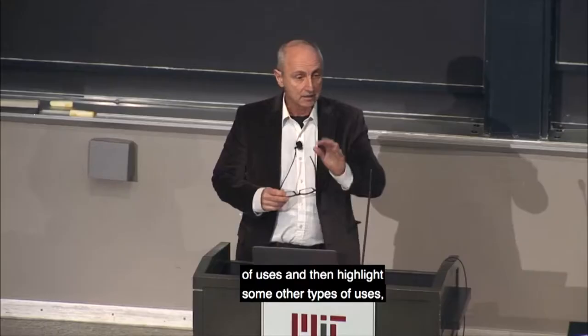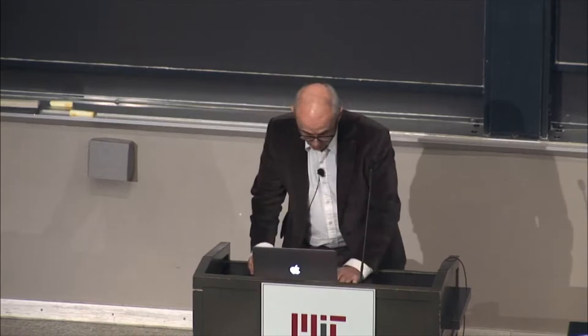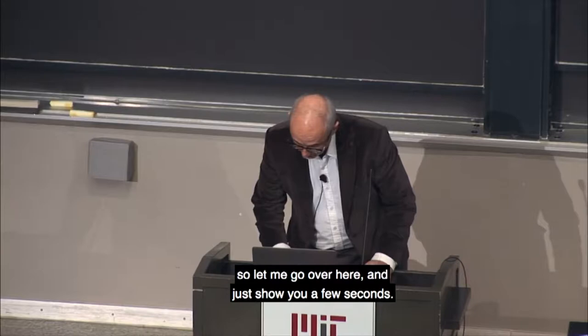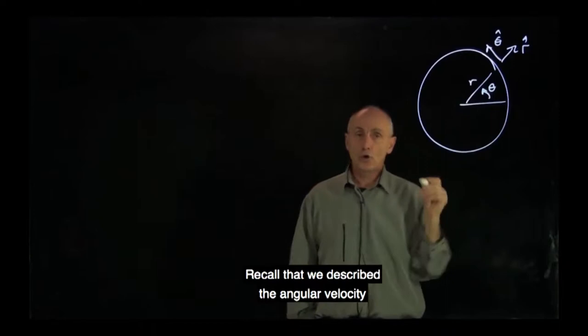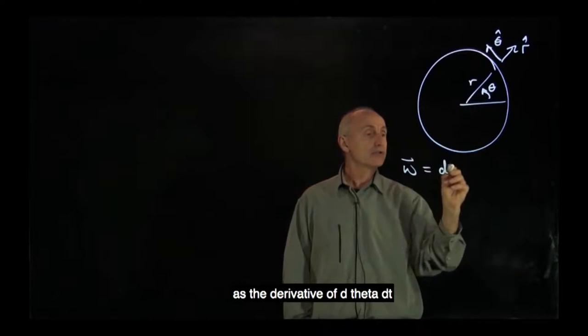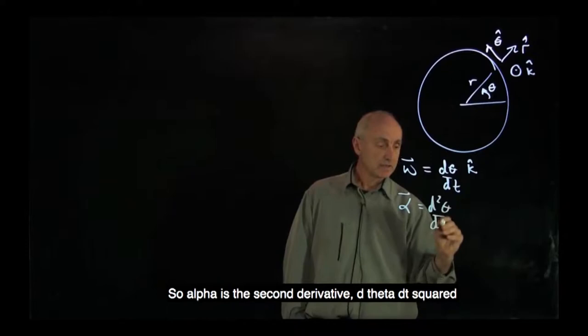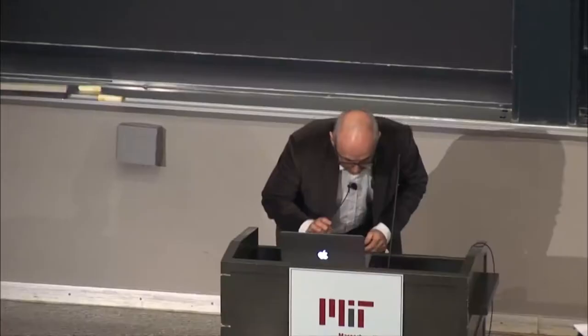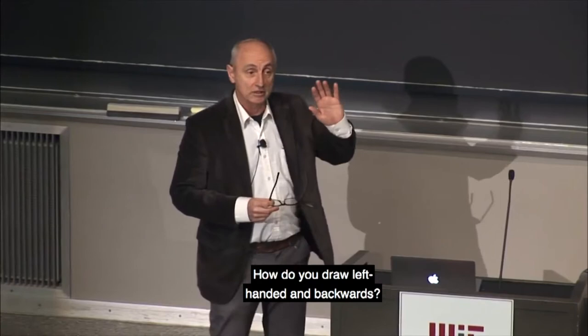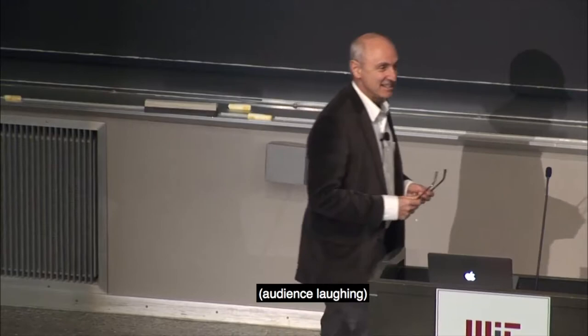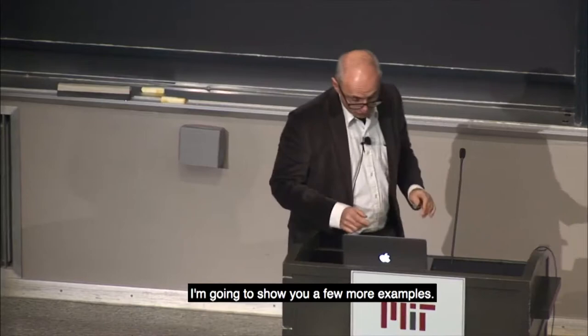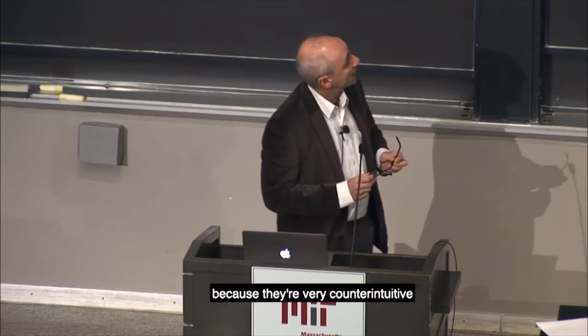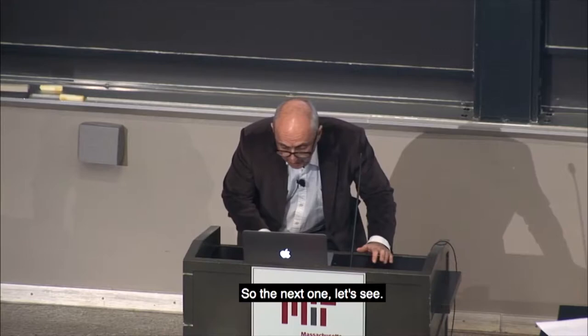We have a lot of different uses today. Let me show you a few seconds of the first excerpt. Recall that we described the angular velocity as the derivative dθ/dt. So alpha is the second derivative d²θ/dt² k-hat, and this quantity is what we call angular acceleration. That's the first question everybody asks: how do you draw left-handed and backwards? It takes a lot of practice — it takes a year. The computer flips the image. This topic — angular acceleration and angular velocity — is extremely difficult for students to grasp because they're very counterintuitive in terms of the vectorial quantities involved.